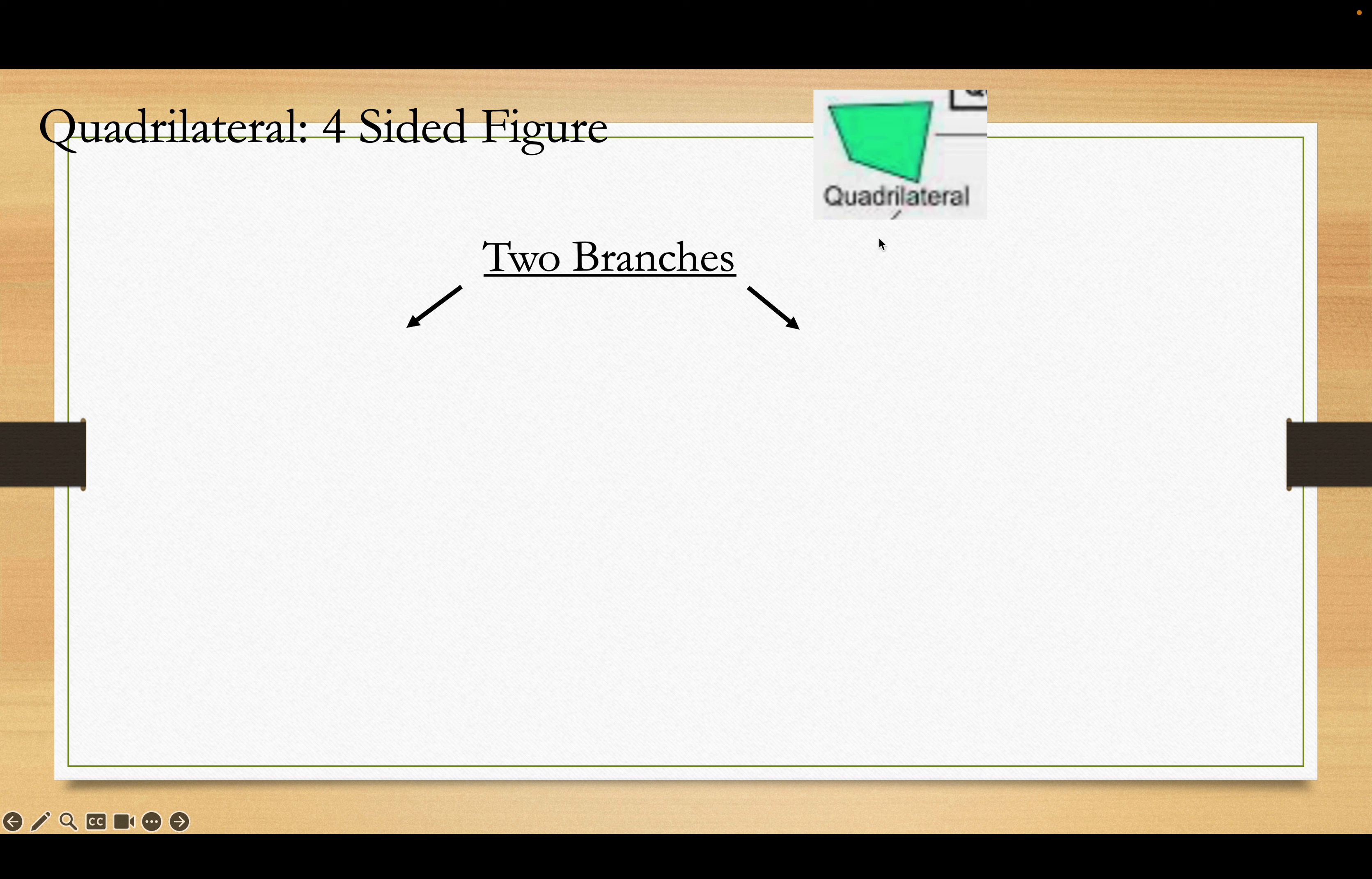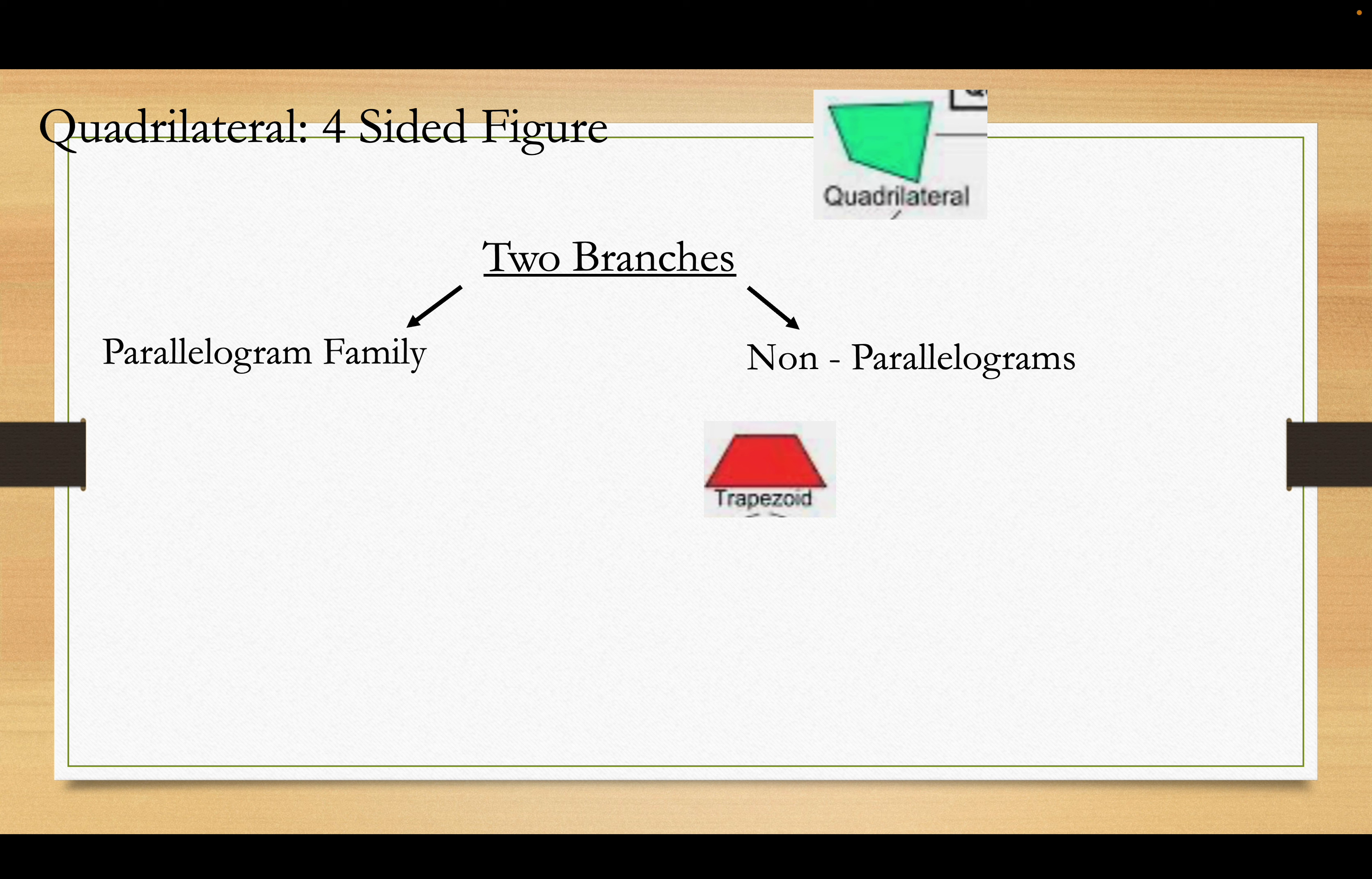So there's a four-sided figure that's called the quadrilateral, right? Quad means four. There's two branches within this. There is the parallelogram family, kind of like the Addams Family, you know? And then there's, of course, the non-parallelograms, which include the trapezoid, among other things. Also an isosceles trapezoid.